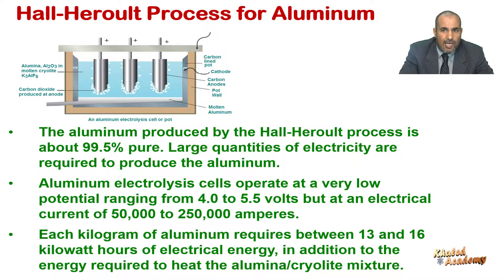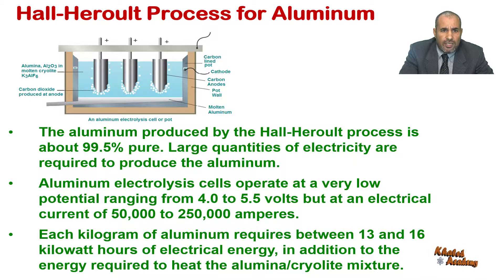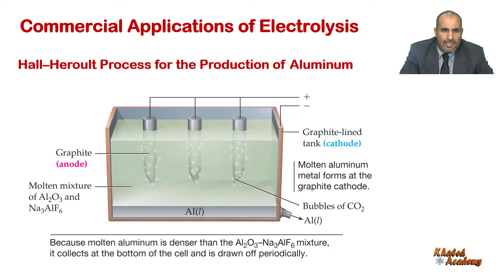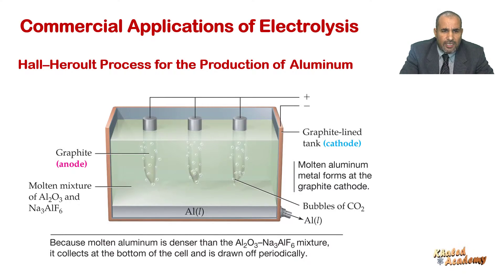The cell operates at a low voltage of about 5 to 6 volts but with very high currents up to 250,000 amperes, because one mole of electrons produces only 9 grams of aluminium. Electrolytic production of aluminium is the largest single consumer of electricity in the United States, making recycling of aluminium products highly desirable. As with sodium manufacture, aluminium production generally takes place near hydroelectric plants.